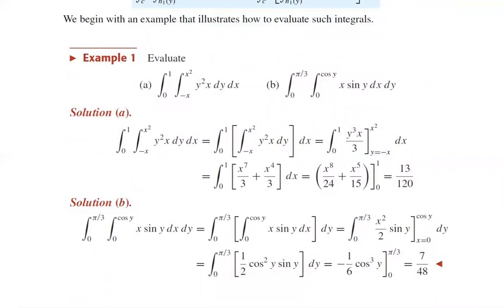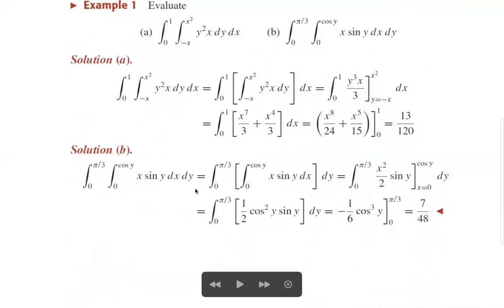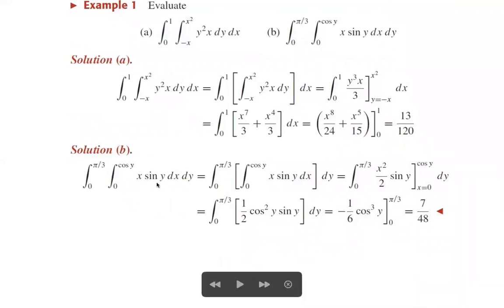Similarly, evaluate the integral from 0 to π/3, 0 to cos(y), of x·sin(y) dx dy. First integrate with respect to x: the integral of x·sin(y) with respect to x, treating y as a constant, gives x²/2 · sin(y). With x varying from 0 to cos(y), this becomes cos²(y)·sin(y)/2. So the integral becomes the integral from 0 to π/3 of (1/2)·cos²(y)·sin(y) dy.